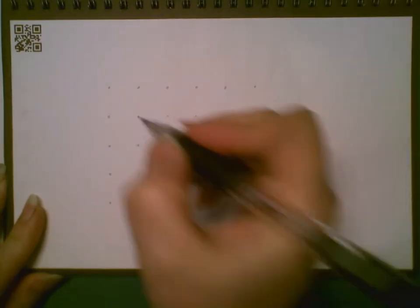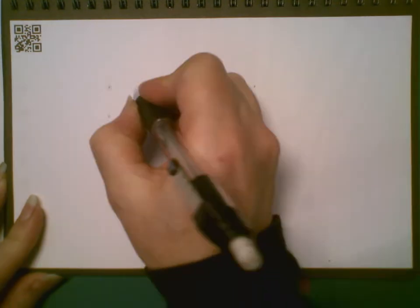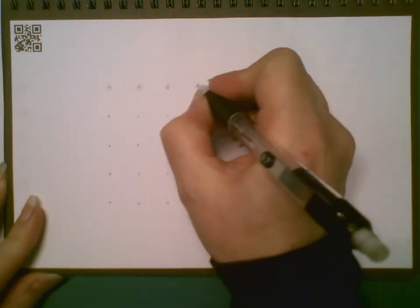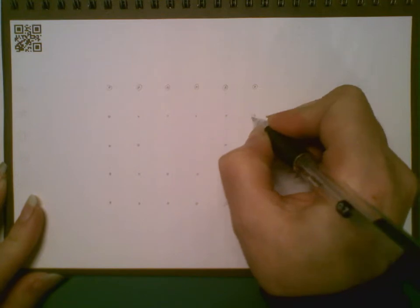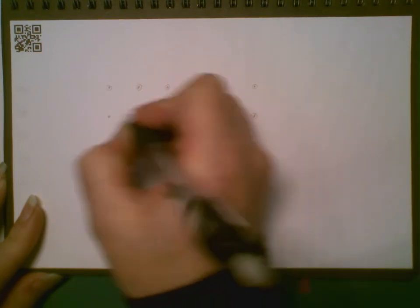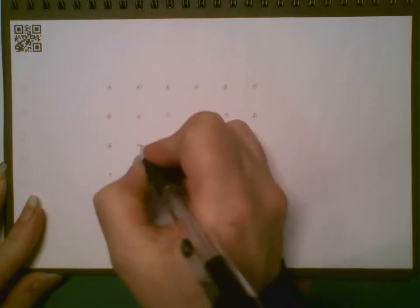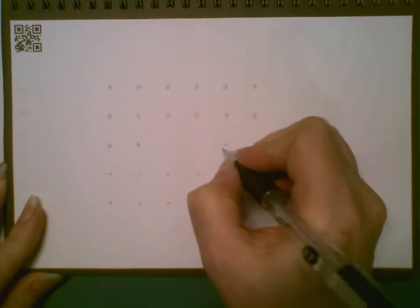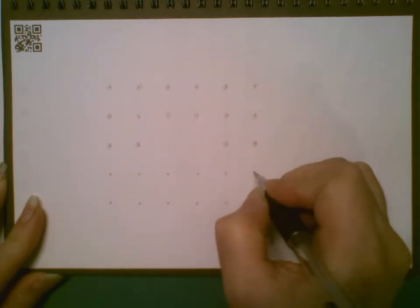Around each of these points I'm going to draw a little circle, and I recommend using pencils so that you can erase if you make a mistake. Once you've got the basic design you can always go over it in a pen or a marker.